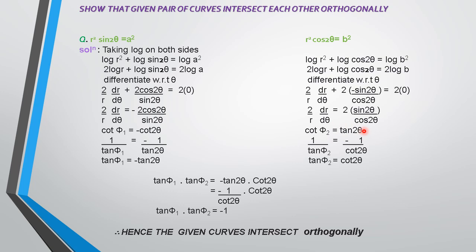Since cot is 1/tan, we can write: tan ψ₁ = −tan2θ. And for the second curve, cot ψ₂ = cot2θ, and since tan is 1/cot, tan ψ₂ = cot2θ, which equals 1/tan2θ.